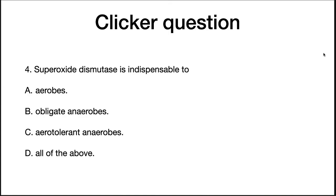Let's test your understanding. Superoxide dismutase is indispensable to which organisms? The correct answer is A — aerobes have to have it because they cannot grow without managing oxygen toxicity. In this section, we covered four important physical limitations to growth: temperature, pH, water availability, and oxygen concentration. These parameters must be in acceptable ranges for microorganisms to be able to grow.